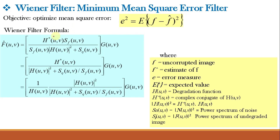Based on these assumptions, the minimum error function is given in the frequency domain by the Wiener filter formula. In the equations: F is the uncorrupted image; F̂ is its estimate; H is the degradation function; H*(u,v) is the complex conjugate of H(u,v); |H(u,v)|² equals H*(u,v) times H(u,v); S_N(u,v) equals |N(u,v)|², the power spectrum of the noise; and S_F(u,v) equals |F(u,v)|², the power spectrum of the undegraded image. These power spectra represent the statistical properties used for estimation.